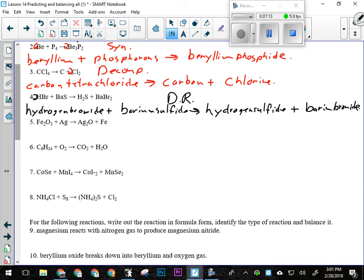For number five here, we've got iron and oxygen. Does iron have more than one possible charge? Then I've got to figure out which iron this is. So oxygen is a minus two.